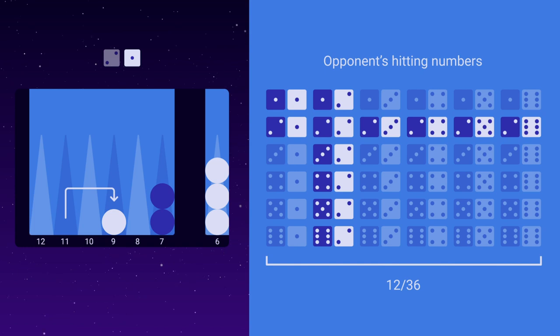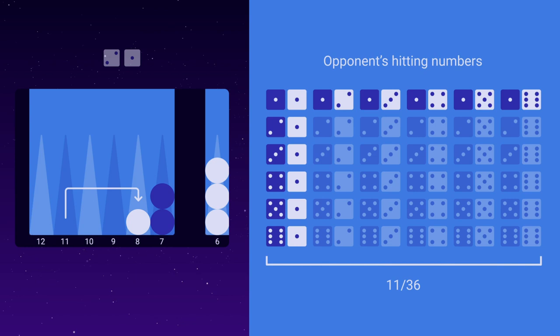The last candidate is moving the checker 3 pips from 11 to 8. Only 11 out of 36 numbers will hit the checker if you move it all the way, which is the lowest probability of getting hit in this position, making this the best move.